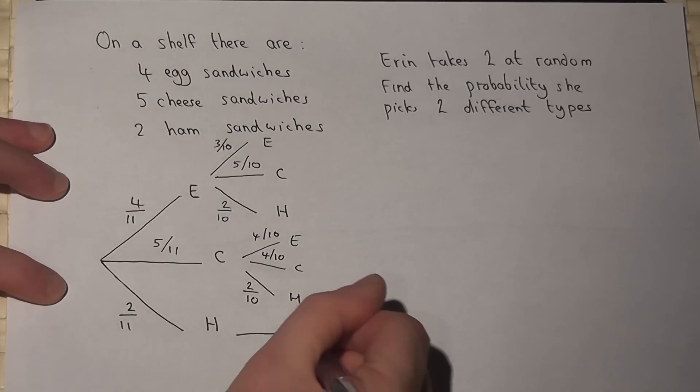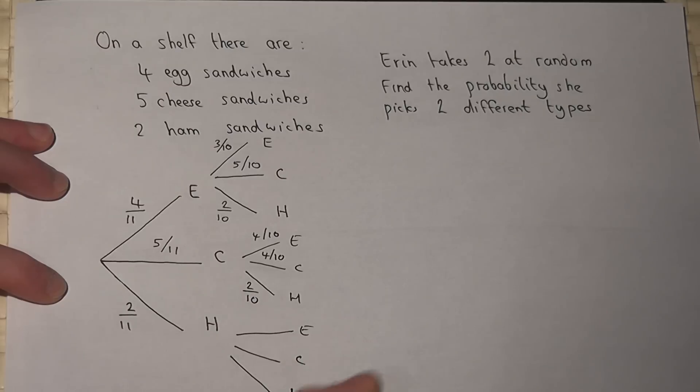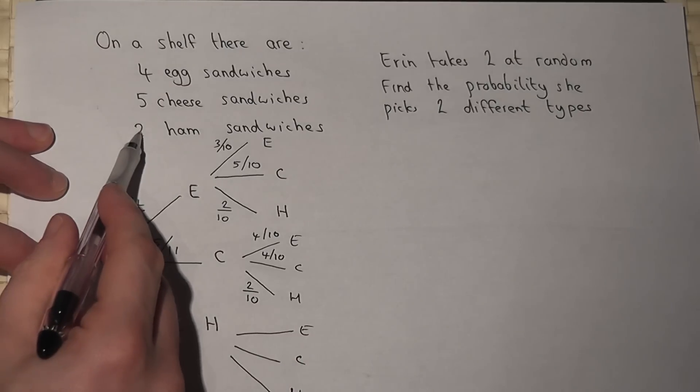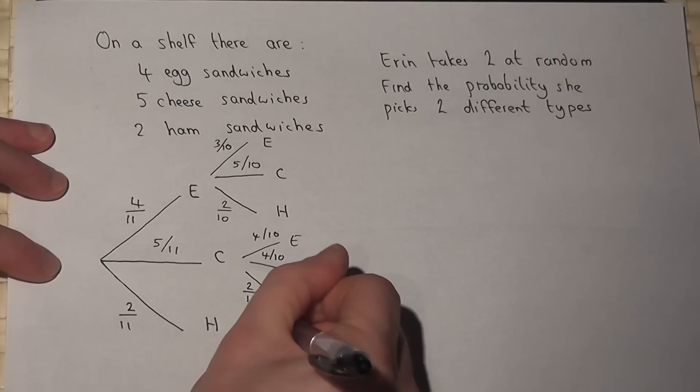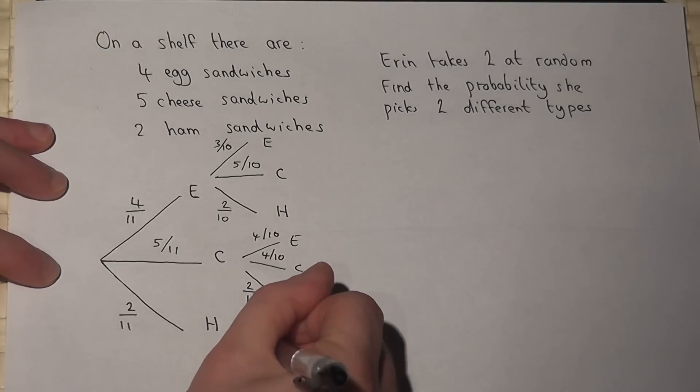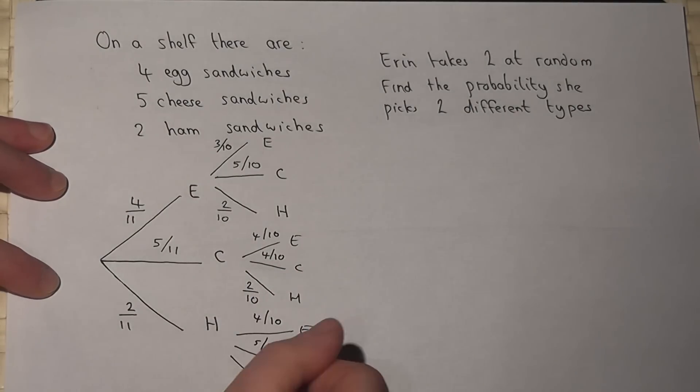And then we do ham. Ham could be followed by egg, cheese, or ham. There's one less ham sandwich. There's still four eggs, so four out of ten. Still five cheese, but only one ham.